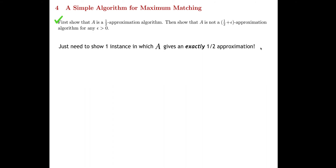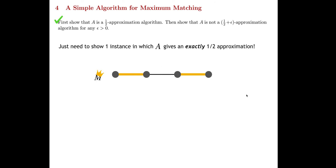A good counterexample is a simple path of length three. The optimal maximum matching would include two edges, but our greedy algorithm A could pick the middle edge first. Once it does, it gets stuck and cannot add anything else, resulting in a matching of size one — exactly half the optimal of size two. This proves A is not a one-half plus epsilon approximation algorithm.